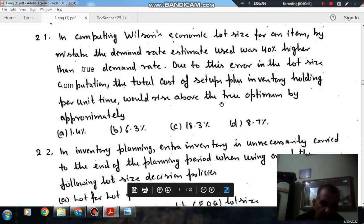Option A: 1.4%, option B: 6.3%, option C: 18.3%, option D: 8.7%.